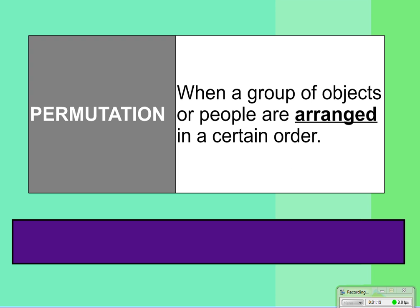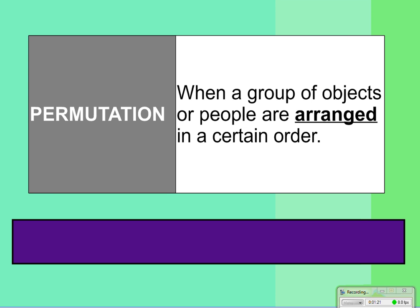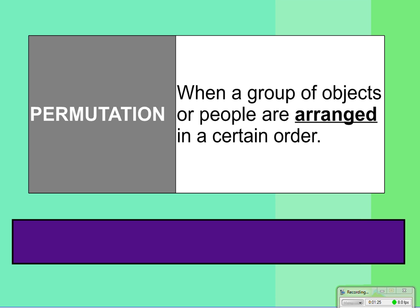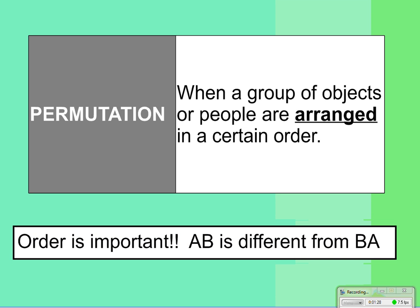So, what is a permutation? A permutation is what happens when you have a group of objects or people who are arranged in a certain order. Order's important. A, B is different from B, A. But here's kind of the big picture here. It's an arrangement. If I arrange things, order matters. It's different than what we call a grouping or a combination. A permutation is going to be an arrangement.